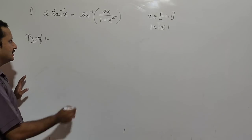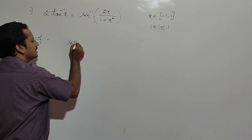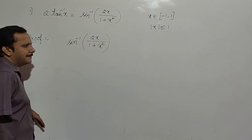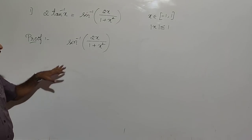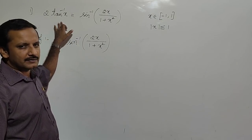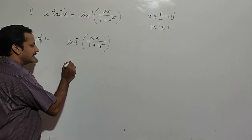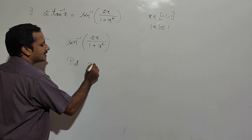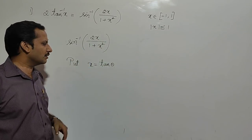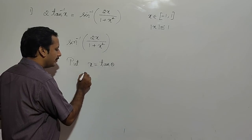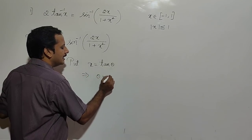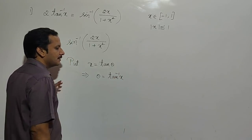I will consider the RHS, which is sin⁻¹(2x/(1+x²)). I need to prove that sin⁻¹(2x/(1+x²)) is equal to 2 tan⁻¹(x). For that, I will make a substitution: put x equal to tan θ. So I am taking x as tan θ. When x = tan θ, by the definition of tan inverse, we can write θ = tan⁻¹(x).